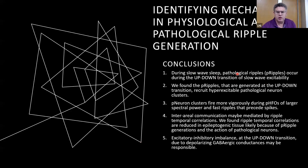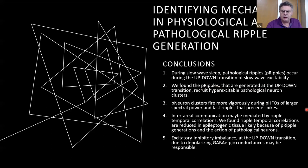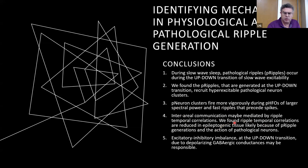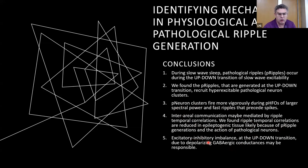In conclusion, during slow-wave sleep, pathological ripples occur during the up-to-down transition of slow-wave excitability, whereas healthy physiologic ripples occur during the down-to-up transition. Pathological ripples generated at the up-to-down transition recruit hyper-excitable pathological neuron clusters that fire more vigorously during pathologic HFOs of larger spectral power and fast ripples preceding spikes. Interregional communication may be mediated by ripple-temporal correlations, which are reduced in epileptogenic tissue, possibly because of pathological ripple generation. Excitatory-inhibitory imbalance at the up-to-down transition may be due to depolarizing GABAergic conductances — a potential new mechanism to target for anti-seizure drugs.